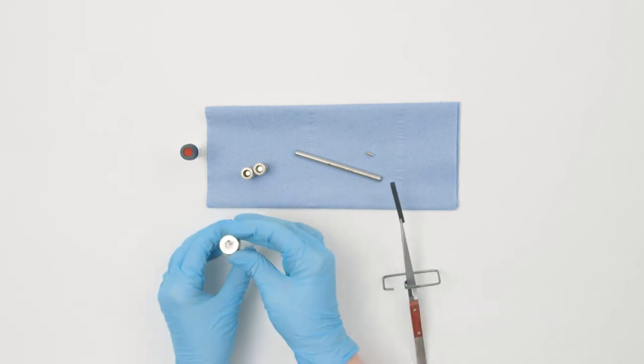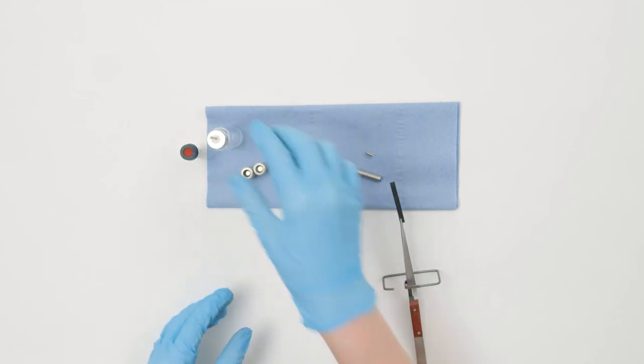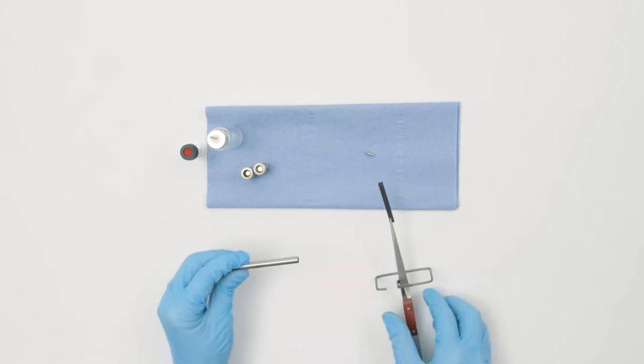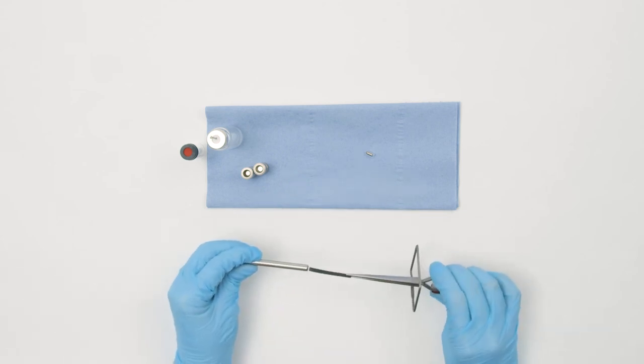In the case of immersive extractions, blot dry the membrane using a dry, lint-free tissue before desorption. Transfer the membrane to a thermal desorption tube, inserting it until it touches the gauze inside.